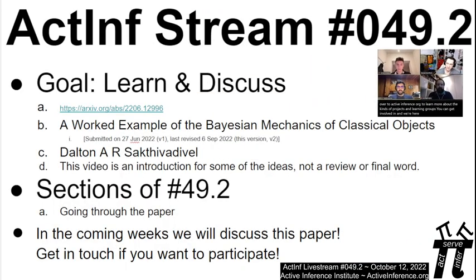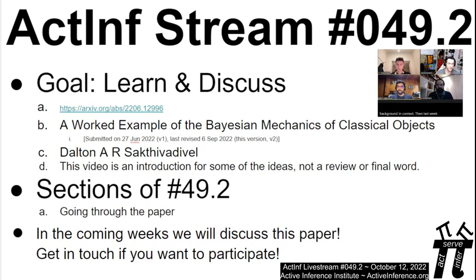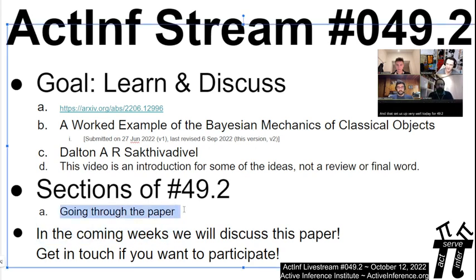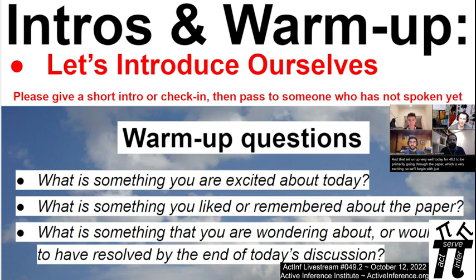We're here in stream number 49.2, the third video of our explorations of the paper 'A Worked Example of the Bayesian Mechanics of Classical Objects.' In the .0, Jakob and Ali and I provided some background and context. Then last week in 49.1 with Dalton, we all convened and had a great discussion. That sets us up very well today for 49.2 to be primarily going through the paper. We'll begin with saying hello and then head right in.